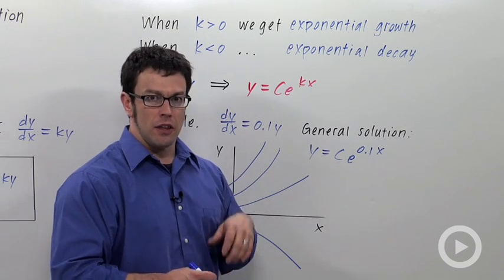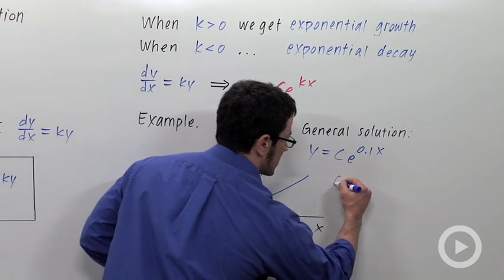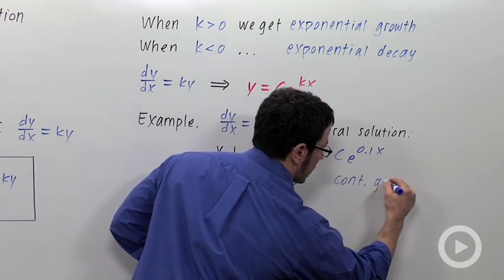Sometimes this k value is called the continuous growth rate. In that case, it would be given as a percent. So the continuous growth rate here would be 10%.